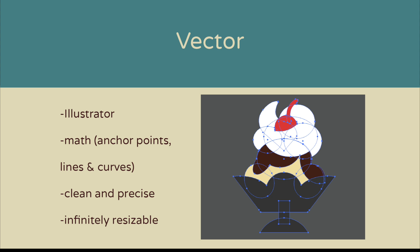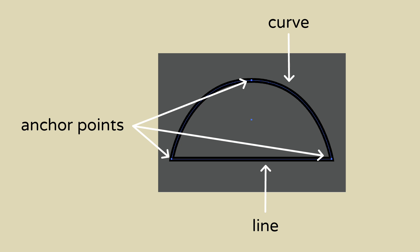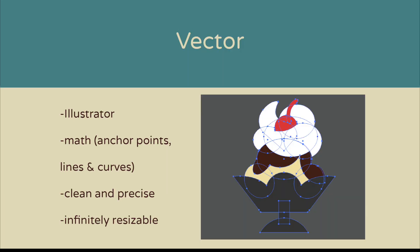Adobe Illustrator is probably the most popular software used to create vector images. Vector images are created using mathematical equations based on anchor points, lines, and curves. These vector images can be shrunk down or enlarged without losing image quality, which is why logos and fonts are usually created using this format. The file sizes are also usually more conservative, but the vector format is a little bit more limited in the amount of detail you can add.